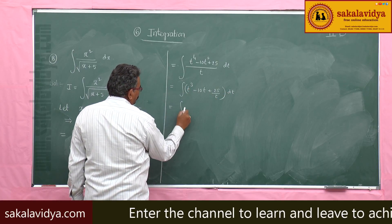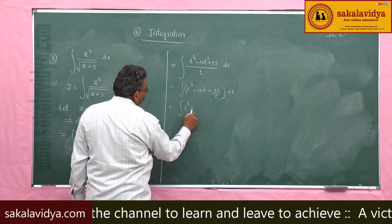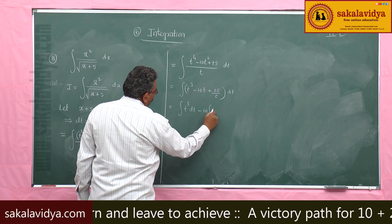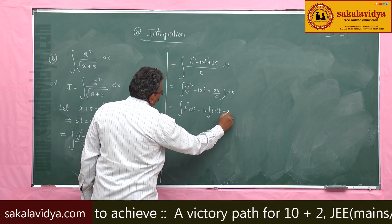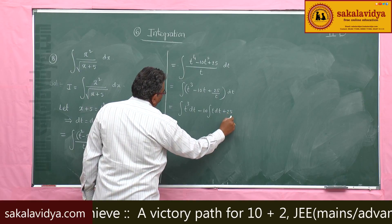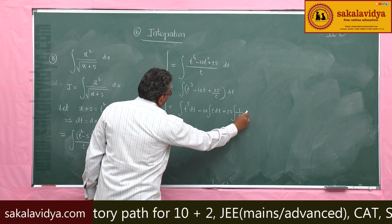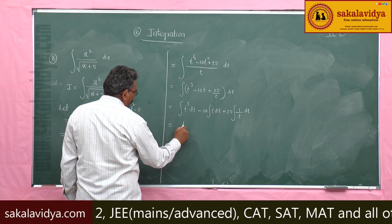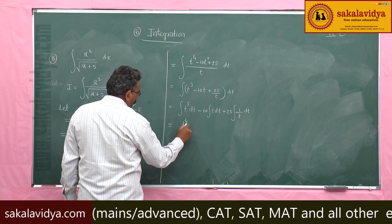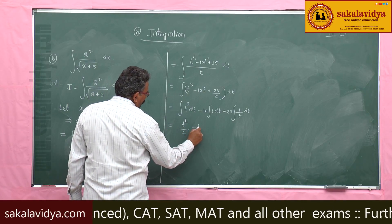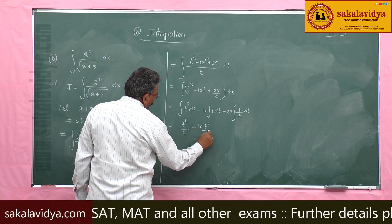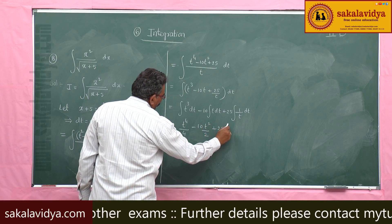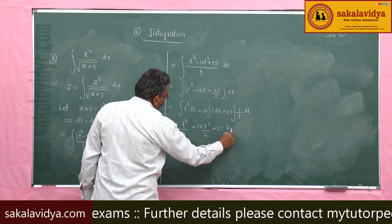Integrating term by term: integral of t³ dt gives t⁴/4, integral of t dt gives t²/2, and integral of 1/t dt gives log|t|. So the result is t⁴/4 − (2φ)t²/2 + φ² · log|t| plus constant.